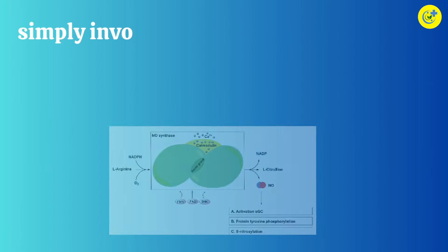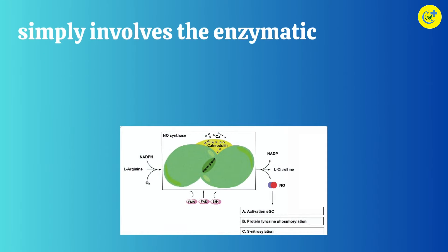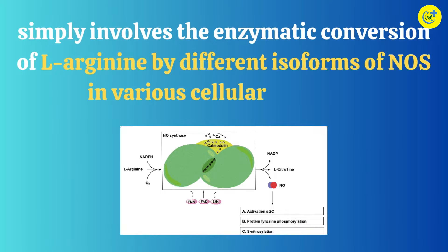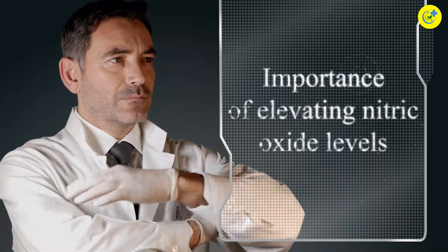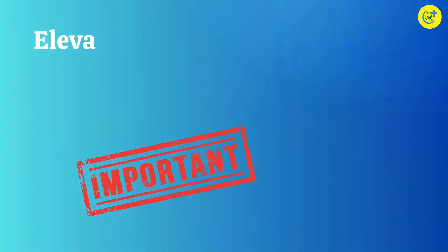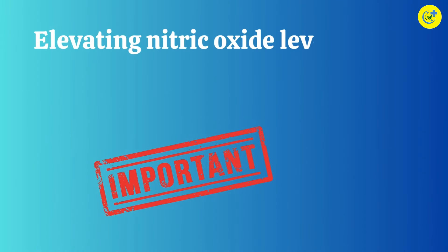This sustained NO production by inducible NOS helps in immune defense mechanisms and contributes to cellular signaling and inflammatory responses. When summarizing this whole scenario, the production of nitric oxide inside the body simply involves the enzymatic conversion of L-arginine by different isoforms of NOS in various cellular contexts.